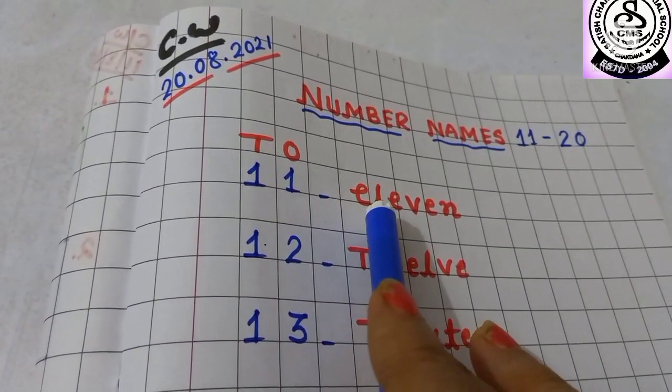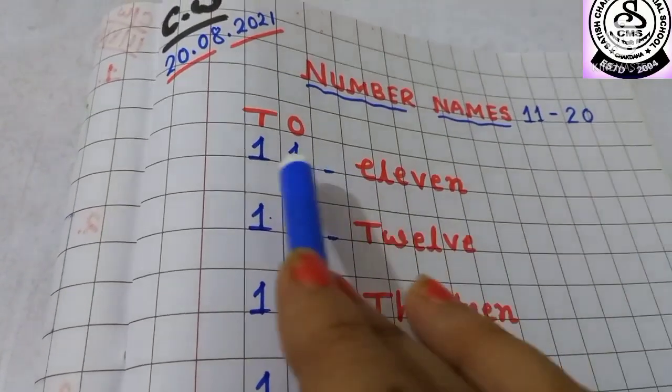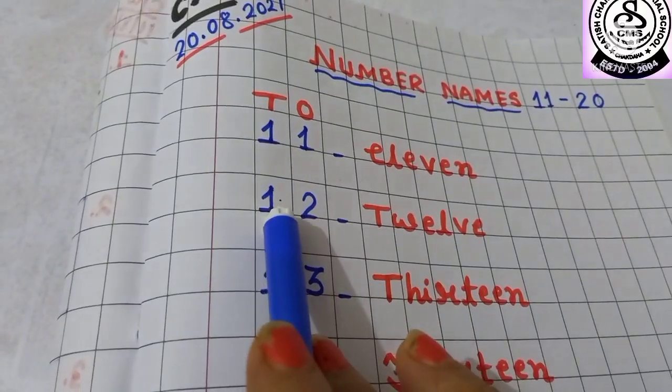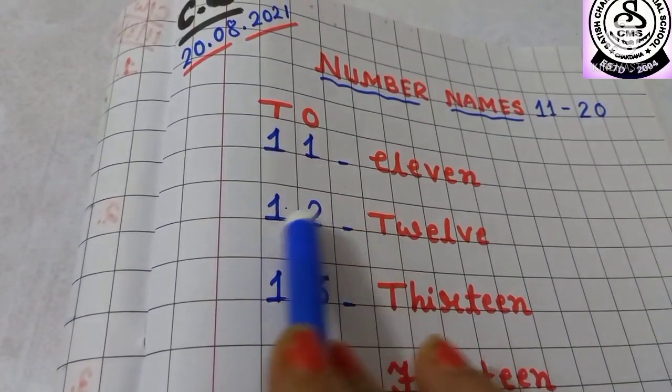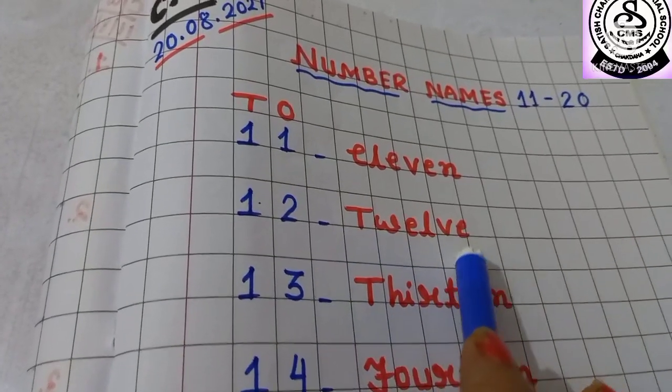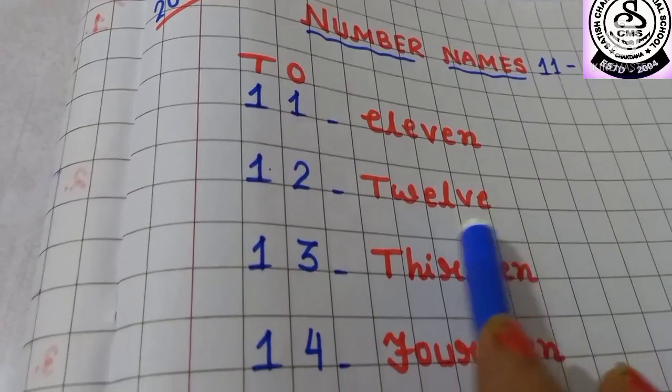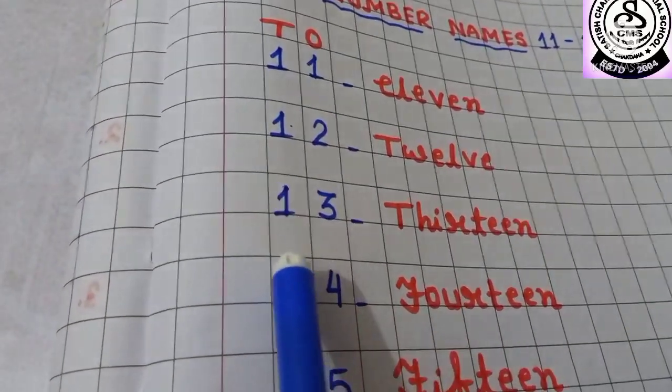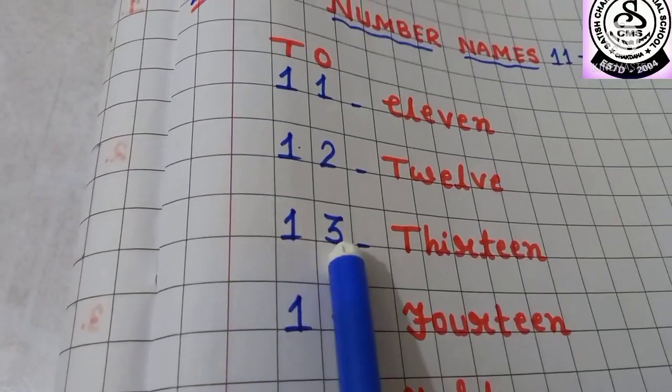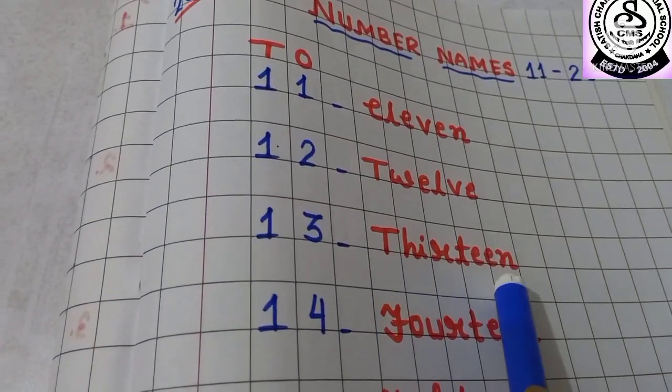What is the spelling of 11? E-L-E-V-E-N, eleven. Then keep one box gap. Then again you have to write here 1, 12. Then you have to write the spelling of 12. T-W-E-L-V-E, twelve. After 12, 13. 1, 3, 13. T-H-I-R-T-E-E-N, thirteen.